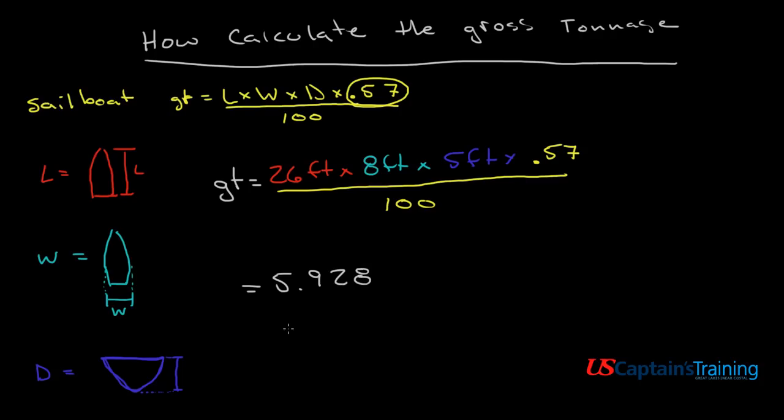And on my certificate, it said the certificate said that it was 6 gross registered tons. So when we compare these two, this 5.928 and the 6, we know that they are very close. Check.